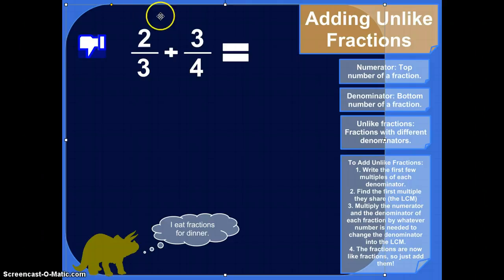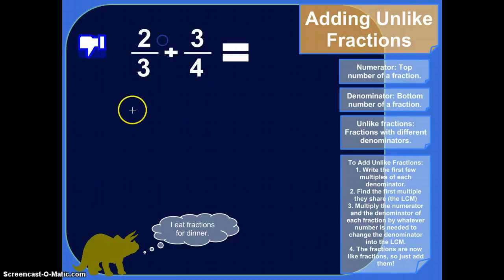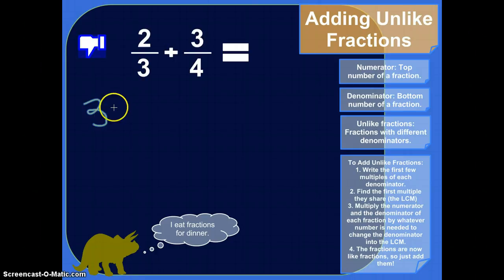So here's what you do. You can't add them yet because you have to have common denominators. So let me grab my green again. So step one. Write the first few multiples of each denominator. So what that means is I could take the first denominator here, three. Where did my green go? Okay, here we go. Three. Okay, so what are the multiples of three?